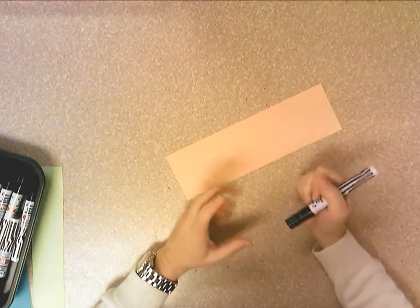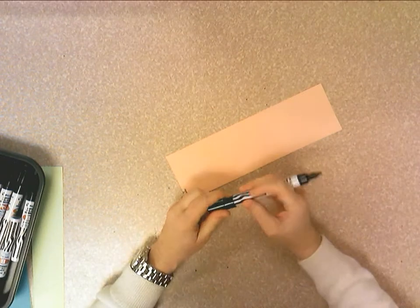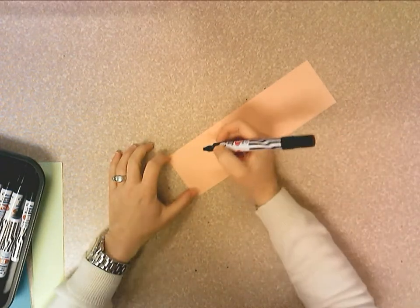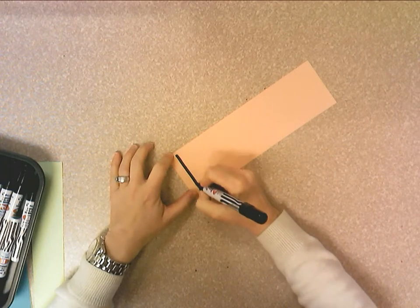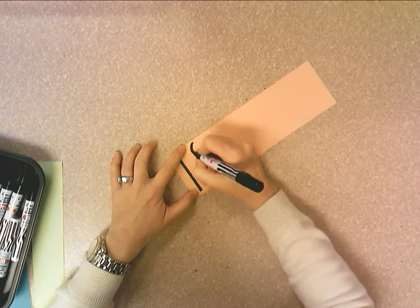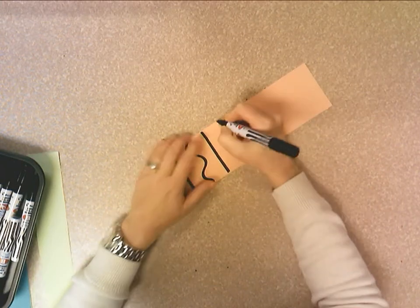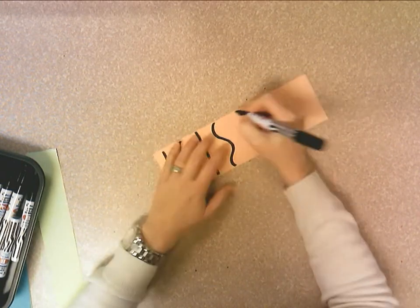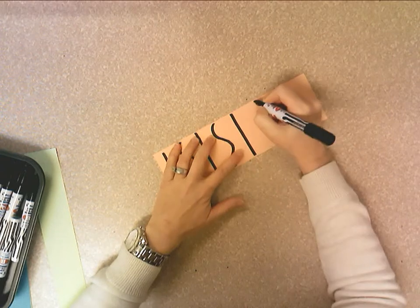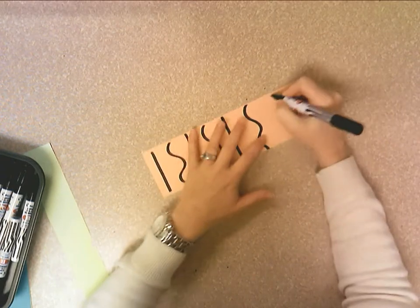So you could do straight, broken, zigzag, wavy, whatever you'd like to do. And I'm going to do straight and then a wavy line. And then straight and then a wavy. So we're doing an alternating pattern, choosing two things and alternating them over and over and over again.